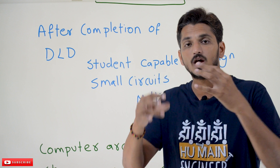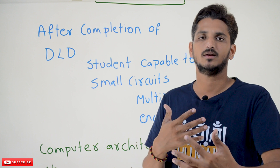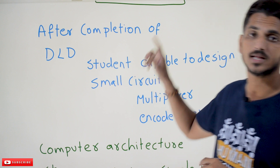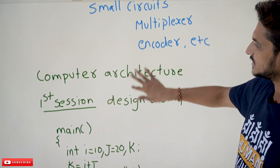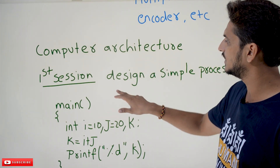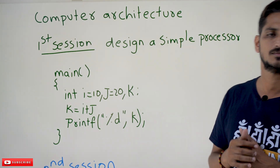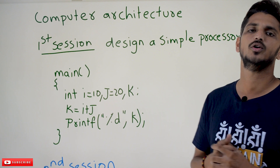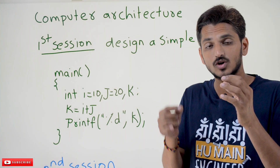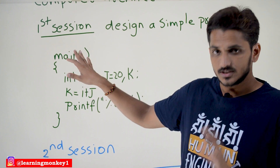Using these small circuits — connecting all of them — we are going to design the complete hardware of the computer. That design understanding you are going to get after completion of the computer architecture and organization course. The first session of the course deals with designing a very simple basic processor. That hardware design understanding you are going to get in the first session.